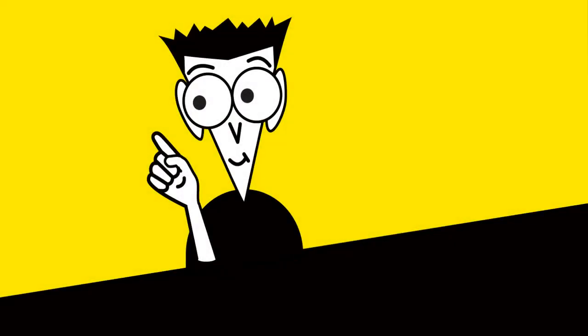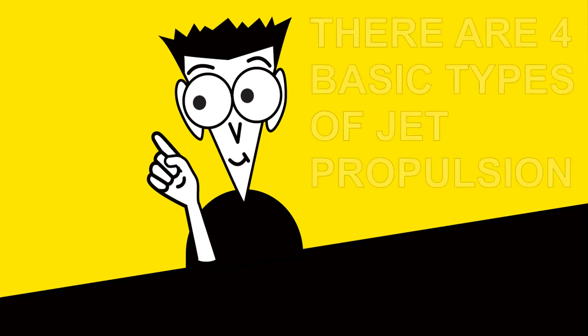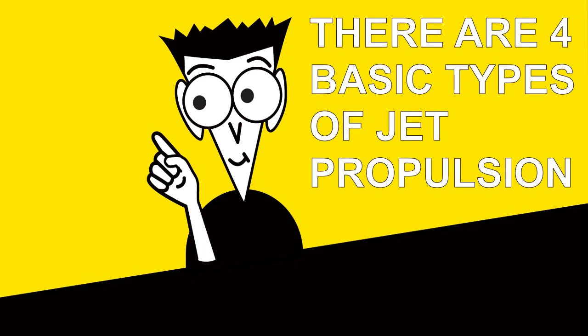So in this video, we have discovered that there are four types of jet propulsion. These are turbojet, turbofan, turboprop, and turboshaft. All are in use in today's aviation.